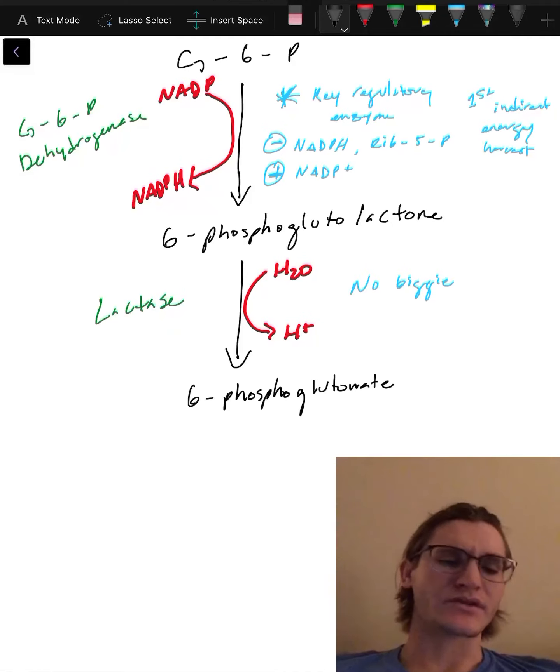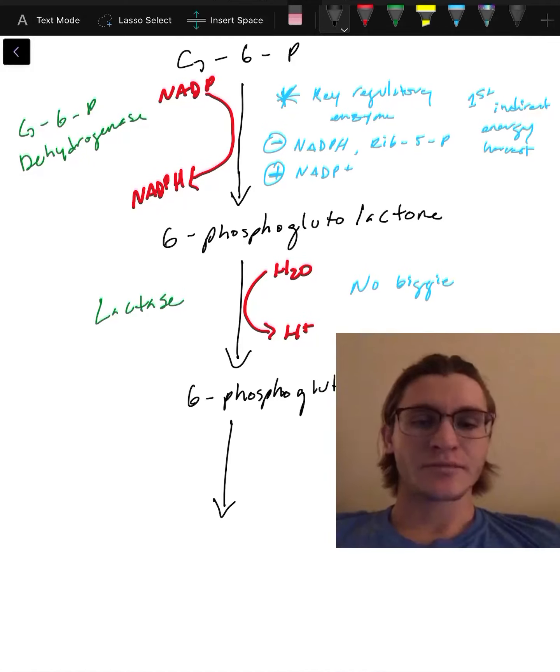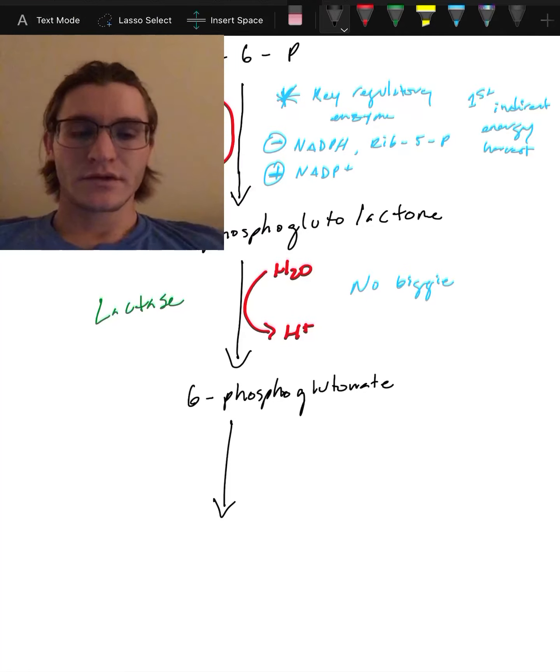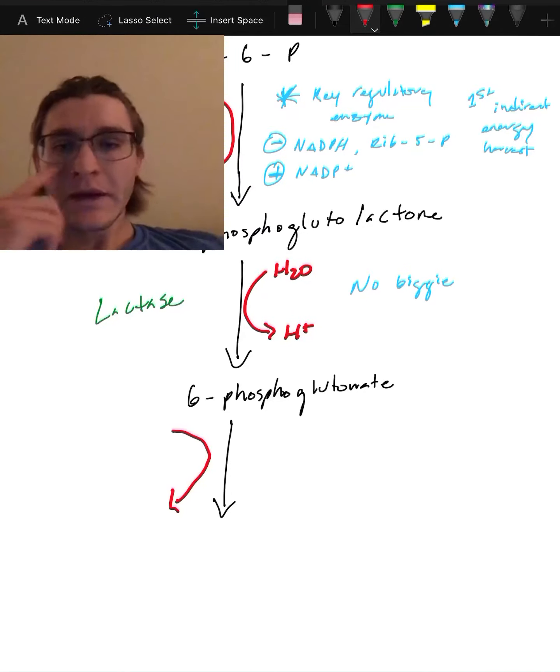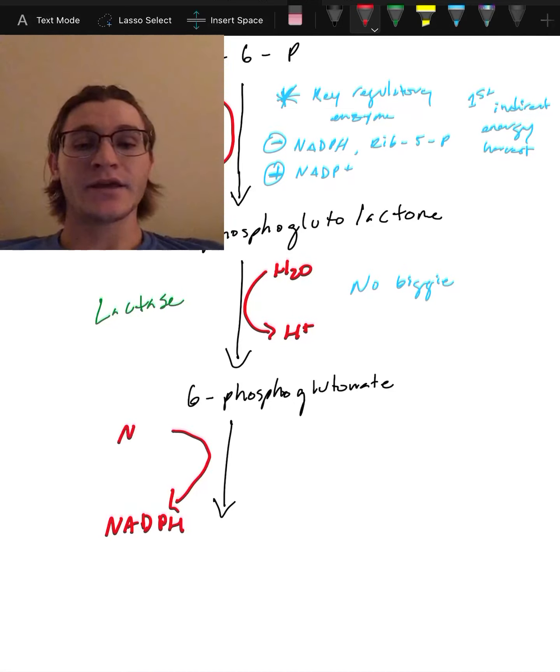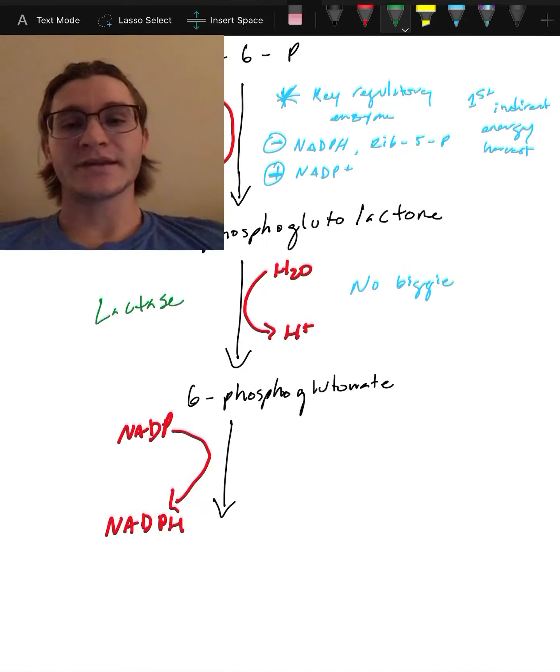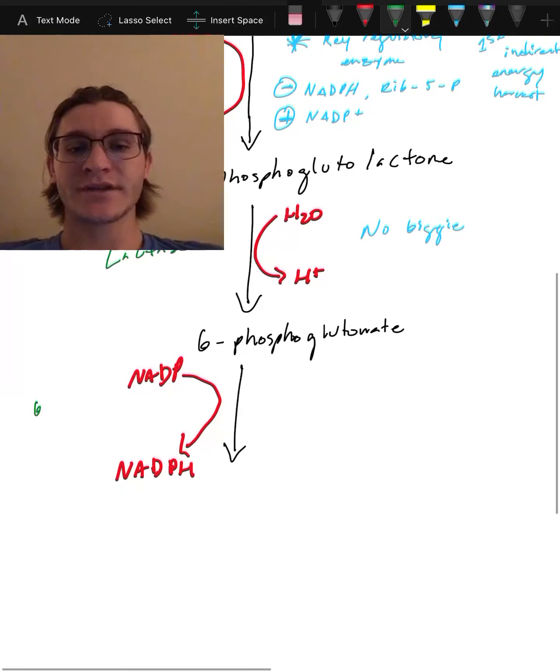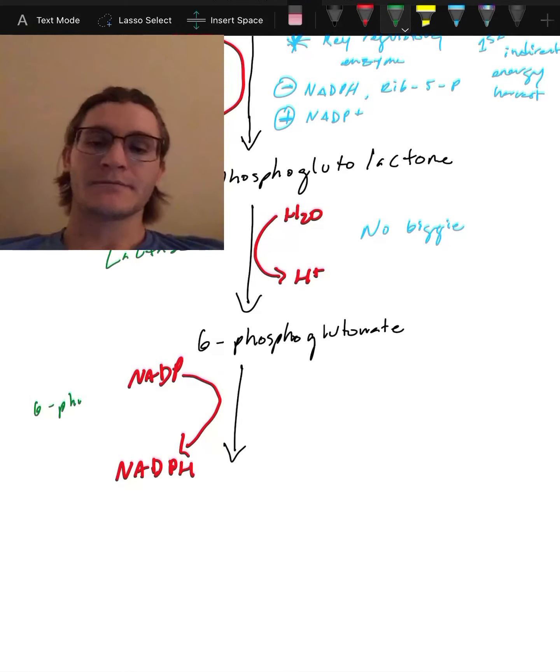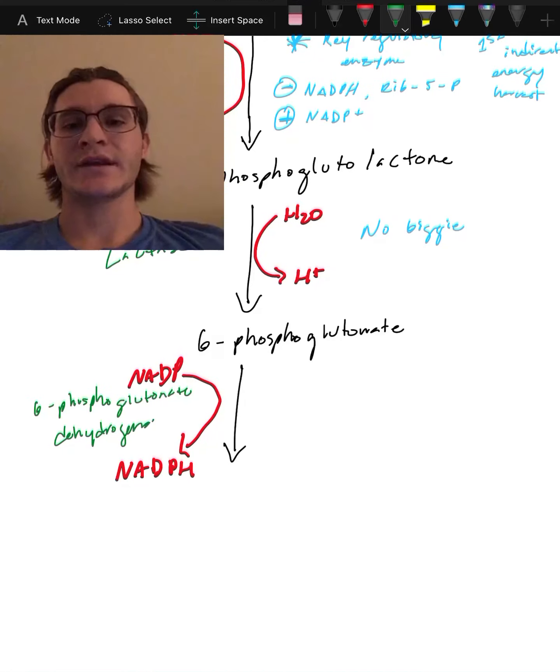We could also summarize that as 6-Pg for 6-phosphoglutonate. We're gonna go over here and this is gonna be another form of indirect energy. So we're gonna get another NADPH and NADP+. So NADPH is made. What does that tell us about the enzyme? Well, it most likely will have dehydrogenase in it. So it's 6-phosphoglutonate dehydrogenase.